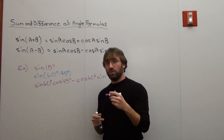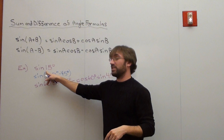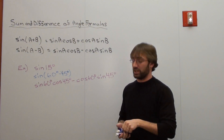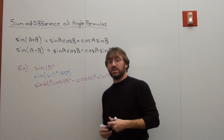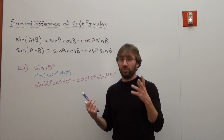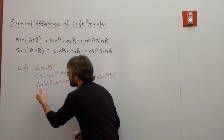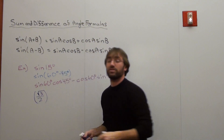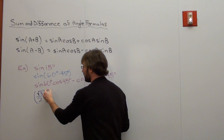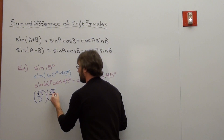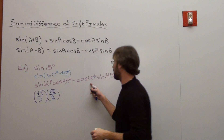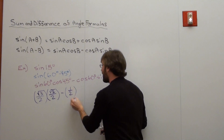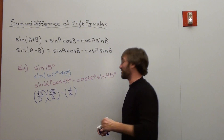What's really cool is you can plug sine of 15 degrees into your calculator and see what decimal it gives you. Then do the same expansion: sine of 60 degrees — hopefully you've memorized it — is root 3 over 2, times cosine of 45 degrees, which is root 2 over 2, subtracted by cosine of 60 degrees, which is 1 half, times sine of 45 degrees, which is root 2 over 2.